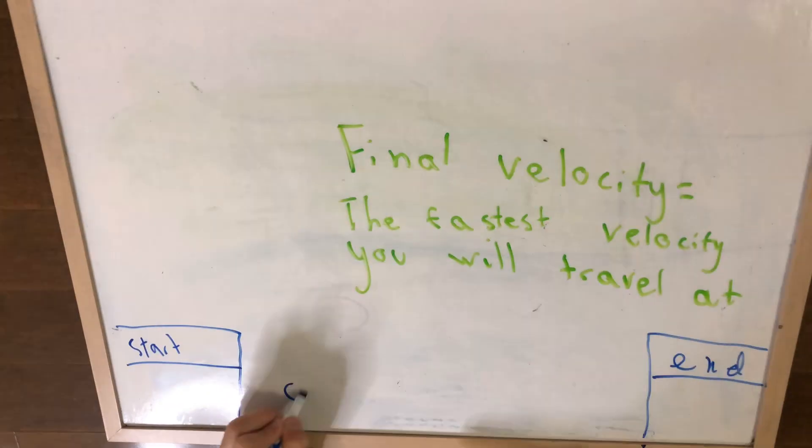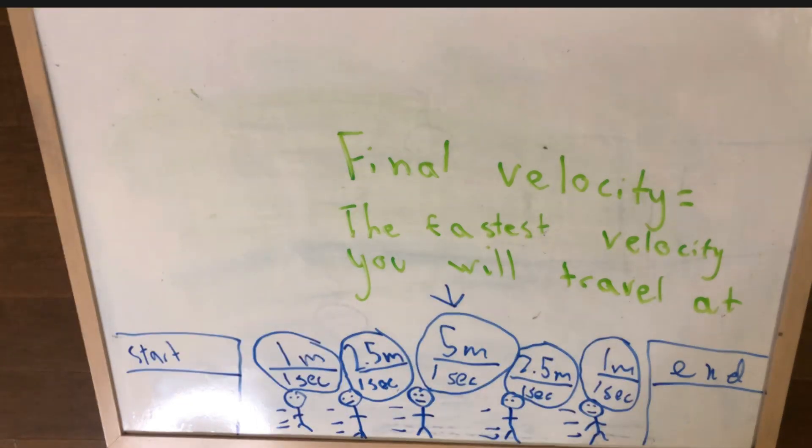The second type of velocity is called final velocity. Final velocity is basically the fastest velocity you will travel at. For say while running the race, your initial velocity at the start may be 1 meter a second, and then it goes up to 2.5 meters a second.